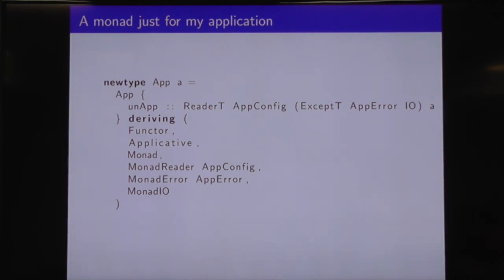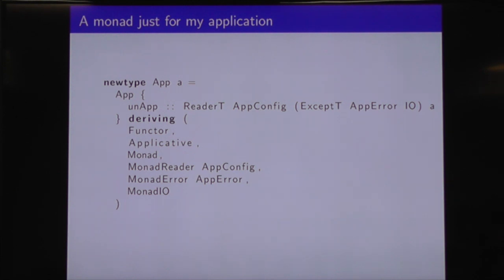As Ben told us, we can stack a bunch of monad transformers together for our application. We can say we've got an App monad here — it's a thing which can read application configs, throw exceptions which are AppErrors, and perform some I/O. We'll use generalized newtype deriving to give it instances for Functor, Applicative, Monad, MonadReader of AppConfig, MonadError of AppError, and MonadIO. Now we'd better remind ourselves how we use it.